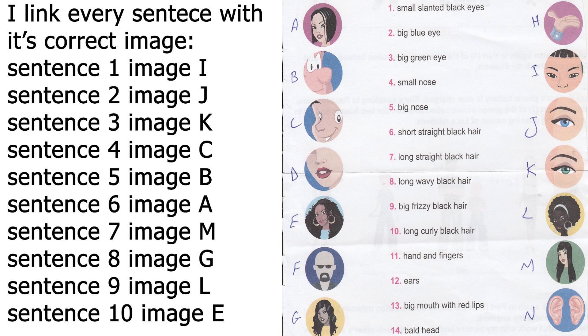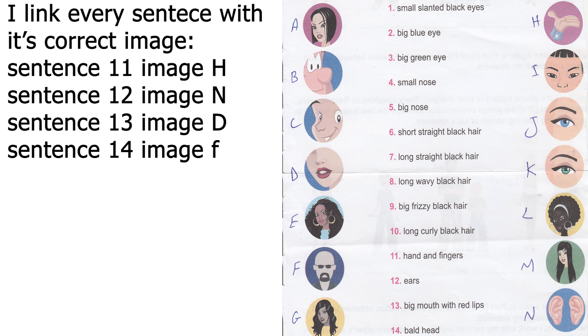Number 9: big, frizzy, black hair — that is picture L. Number 10: long, curly, black hair — that is picture E. Number 11: hand and fingers — that is picture H. Number 12: ears — that is picture N. Number 13: big mouth with red lips — that is picture D. Number 14: bald head — that means he has no hair — that is picture F.